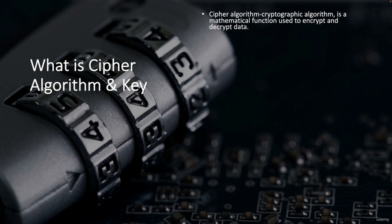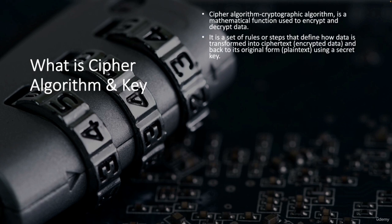The foundation of all encryption algorithms or cipher algorithms is mathematics. When we look at different algorithms like RSA, Diffie-Hellman, and elliptical curve, they are nothing but a set of mathematical steps. It is a set of rules or steps that define how data is transformed into ciphertext. These are the rules used to convert plaintext into ciphertext — the encrypted text — and then, because you have to convert it back, you use the same algorithm to restore it to its original form.